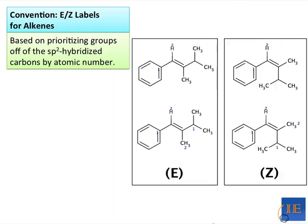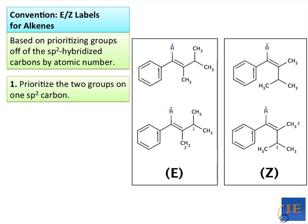There's a second convention for labeling alkenes that can't just be described by simple cis-trans terms, and that's called the EZ convention. It's still based on prioritization, but the process is a little bit different. The first step is to prioritize the two groups on one of the SP2 carbons. Starting with the SP2 carbon on the left, we prioritize the two substituents: one is a carbon, one is a hydrogen, so we give the carbon number one and the hydrogen number two based on atomic number.